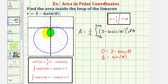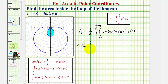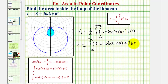Notice how just by analyzing the graph, it's not easy to determine this interval of integration. Now let's evaluate. We begin by squaring the quantity three minus six sine theta, giving us one-half times the integral of nine minus 36 sine theta plus 36 sine squared theta.